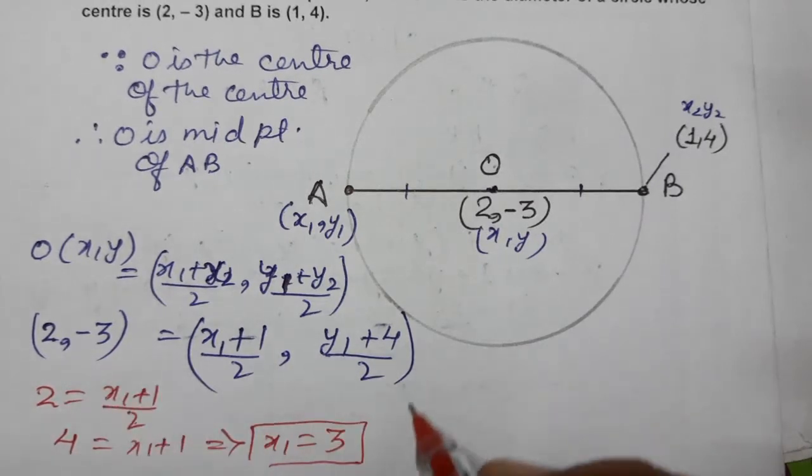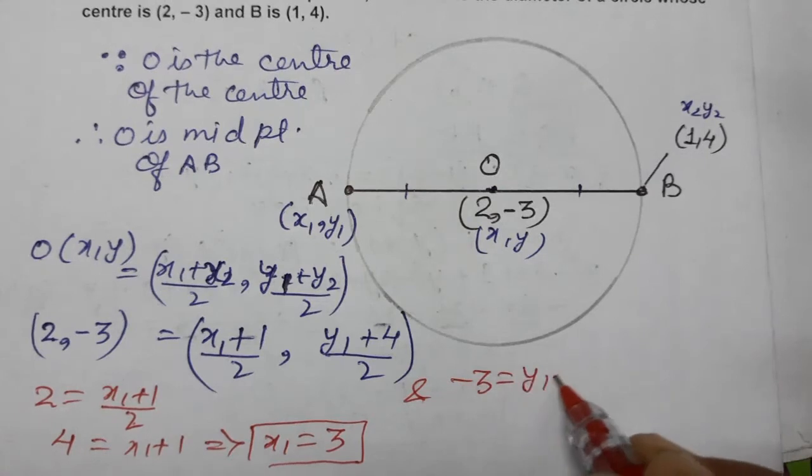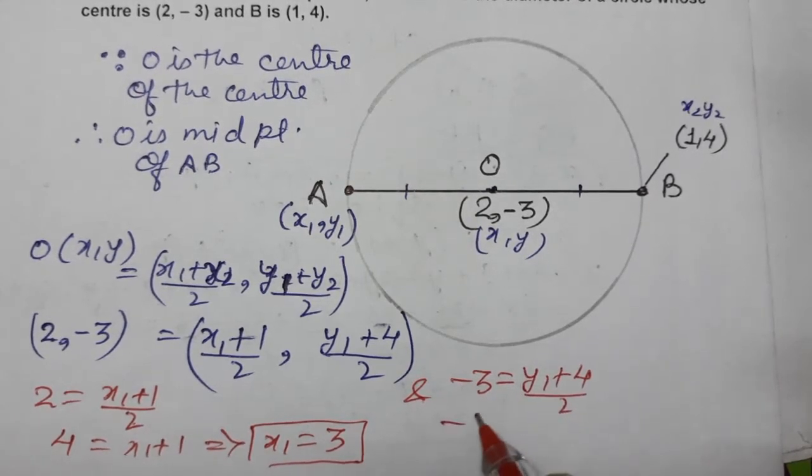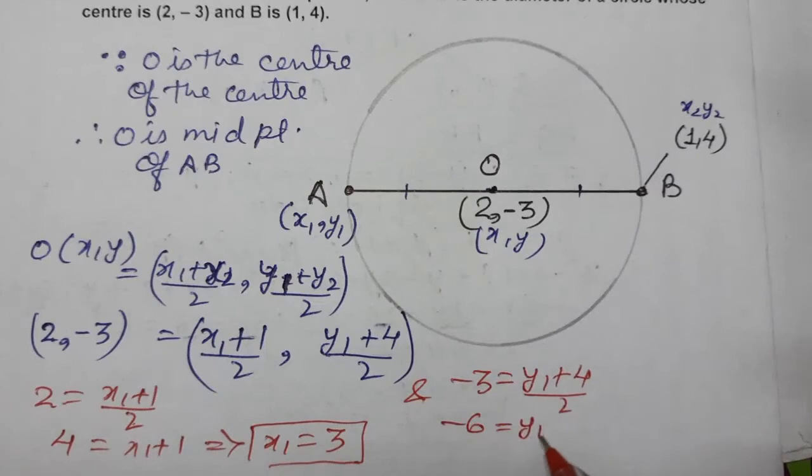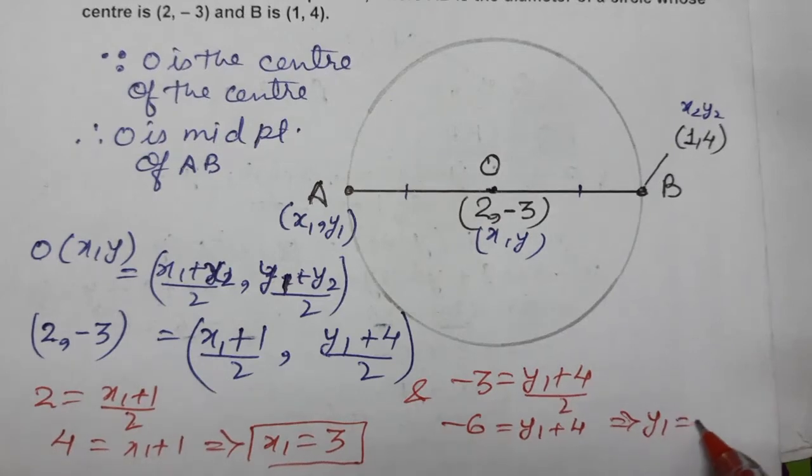Now comparing the y-coordinates, minus 3 equals (y1 plus 4) by 2. Multiplying by 2, we get minus 6 equals y1 plus 4, which gives us y1 equals minus 6 minus 4, so y1 equals minus 10.